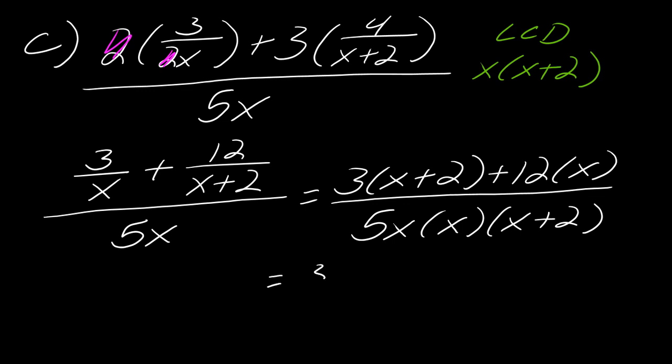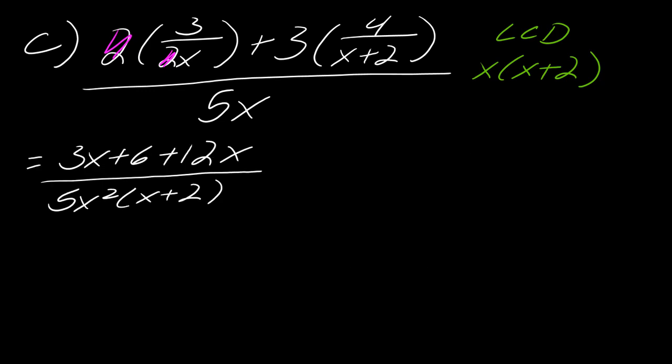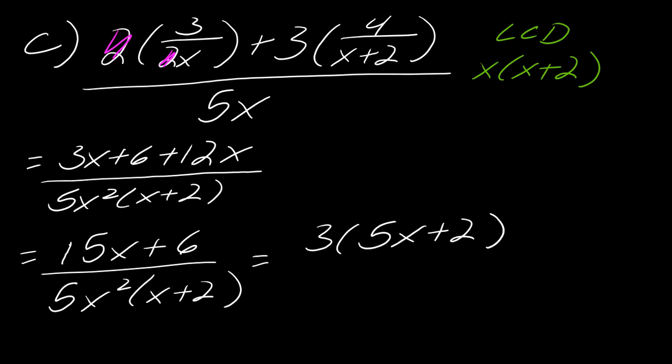So if I actually distribute this, I get three X plus six plus 12 X over, let's call this five X squared times X plus two. And then let's see, I need to make a little space. So then from here, you can see that you've got some like terms. So this will be 15 X plus six over five X squared times X plus two. And now at this point, this is where you can finally simplify. And there's again, there's not a lot I can really do to simplify here. Like out of the top, I could factor out the three to get this five X plus two over five X squared times X plus two. But as you can see, you really can't cancel any farther than this. So I don't know that I would actually factor out the three.